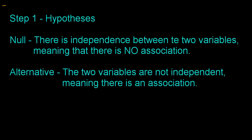There are four steps, like any other significance test. Step one is the hypotheses. The null is always that there is independence, which means no association. Some will write there is no association between X and Y; others will say there is independence between X and Y — those mean the exact same thing. The alternative is that the two variables are not independent, meaning there is an association.